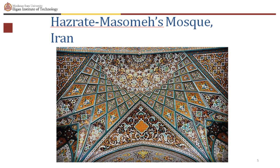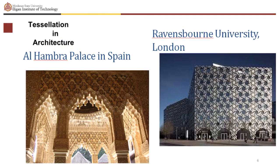In Gothic architecture, window panes and mosaics with colored glass pieces connected by lead strips have occurred. Some examples of tessellation in architecture are the Alhambra Palace in Spain and Ravensbourne University in London.